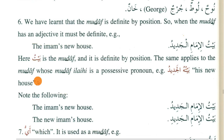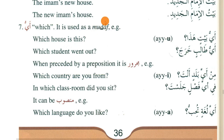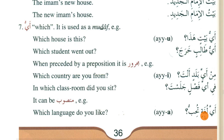You also learned that 'ayya' means 'which', and it is always used as mudaaf. Now the question is: 'ayya' has damma in one place, kasra in another, and fatha in another — why are we using different vowels with the same word? You need to understand this.